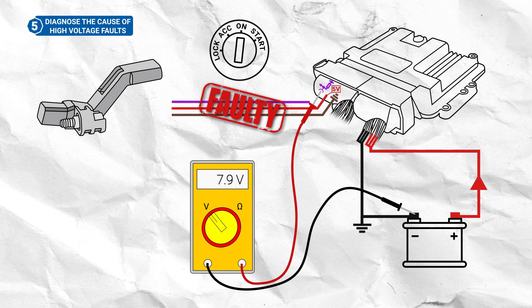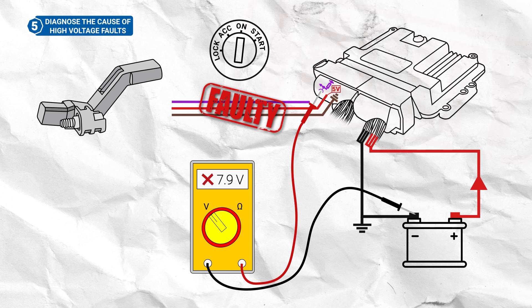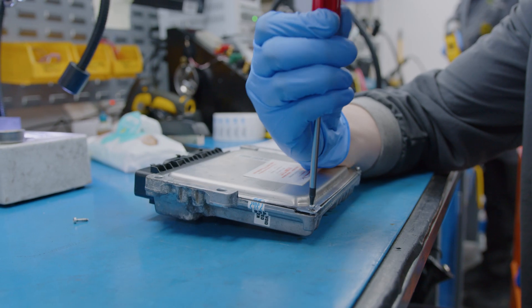However, if the voltage reading remains high, then there is also a short within the ECU which will need to be remanufactured.